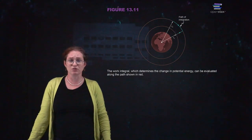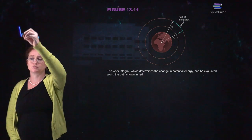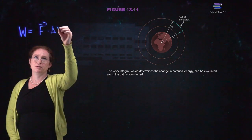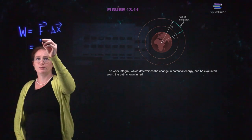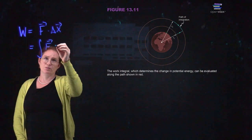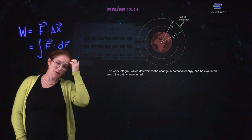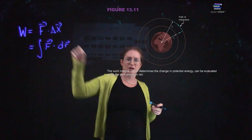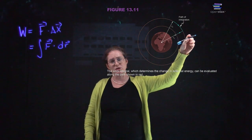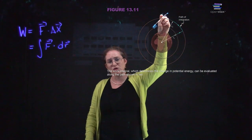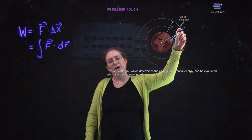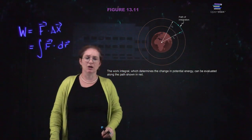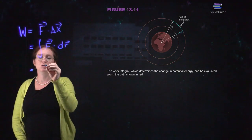Now let's define the work done by a gravitational force. When we do work, we're talking about the force dotted with the displacement. If you are traveling in a circle, your displacement is perpendicular to the force, and therefore if you travel in a circle you have no work done by gravity. However, if you travel along a radial path, you are going to do work.